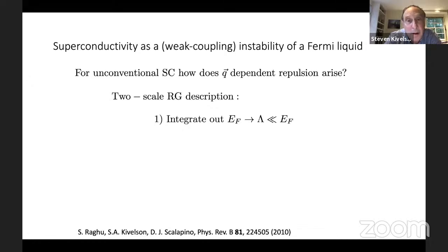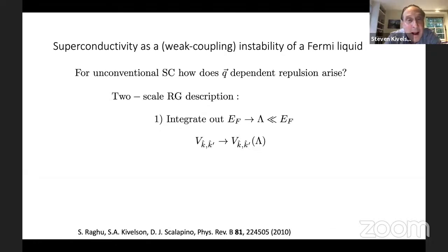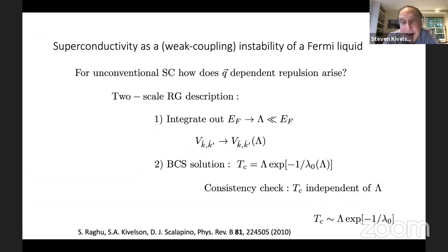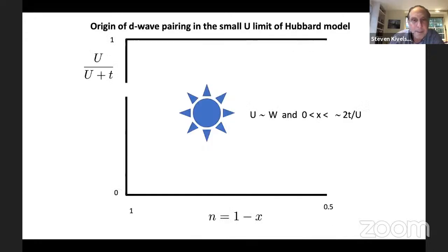If the interactions are weak, we can carry out this problem perturbatively and get a new effective interaction at the scale lambda. In the second stage, we solve using BCS mean field theory to get TC in the familiar way. However, in this case the cutoff lambda is a computational device — it's not a physical scale — so we need to end up with a result that's independent of exactly where we choose to go from the first stage of renormalization to the second.